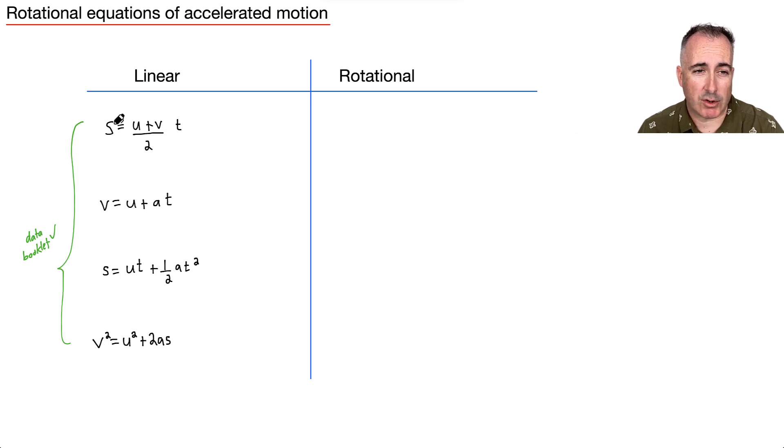Well, if you remember all your different variables, you can just figure them out. So instead of s, we say delta theta. Remember, instead of u, we say omega i, the initial angular velocity. Instead of v, we say omega f, still divided by 2, still times time.